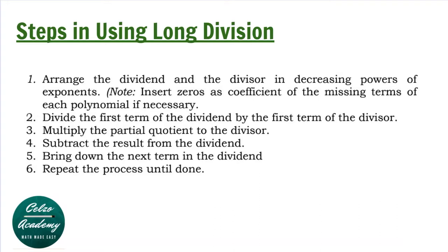Step 1: Arrange the dividend and the divisor in decreasing powers of exponents. Take note that you need to insert zeros as the coefficient of the missing terms of each polynomial if necessary. Step 2: Divide the first term of the dividend by the first term of the divisor.